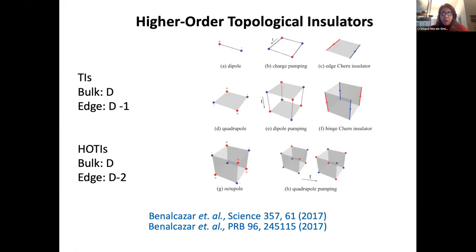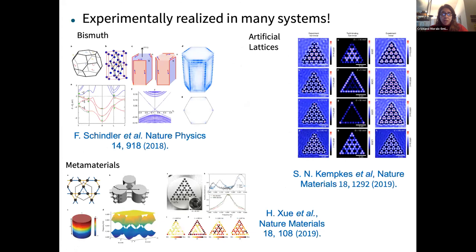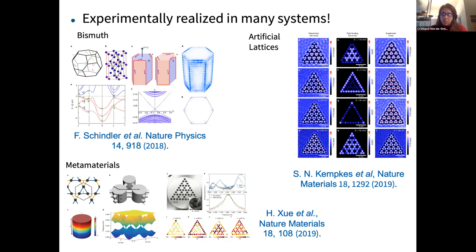These models were proposed by Benalcazar, Bernevig, and Taylor Hughes in 2017, and that is the model we will use today. These models have been observed experimentally in many different systems — in bismuth, in metamaterials made with photonic systems, in Kagome electrics, and also in electronic systems. We did it in 2019 in an artificial electronic quantum simulator where we could see the corner modes, though these systems didn't have all the features of the original BBH model.